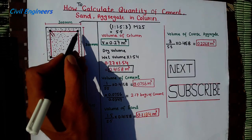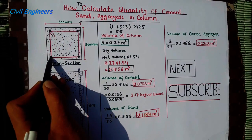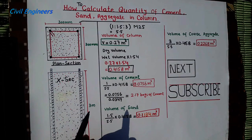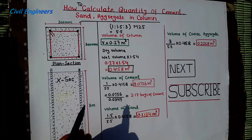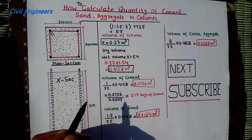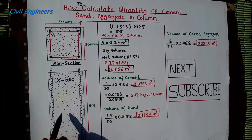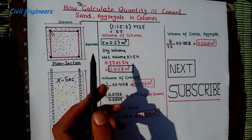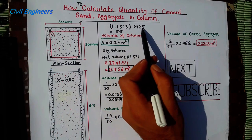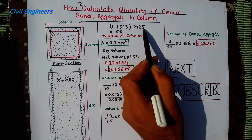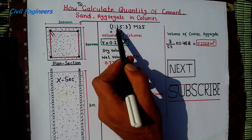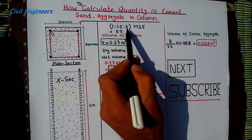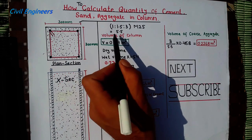There are 4 bars in this cross section. In the next lecture I will also show you how to calculate quantity of steel for this column. For the concrete ratio, I take M25, which means mix 25, equal to 1:1.5:3.